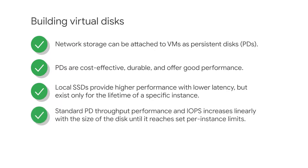Standard persistent disk performance scales linearly up to the VM performance limits. A vCPU count of four or more for your instance doesn't limit the performance of standard persistent disks. A vCPU count of less than four for an instance reduces the write limit for input-output operations per second, or IOPS, because network egress limits are proportional to the vCPU count.